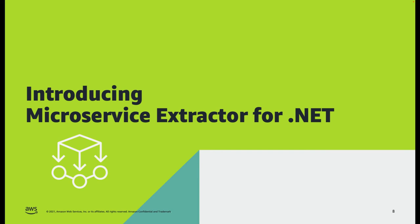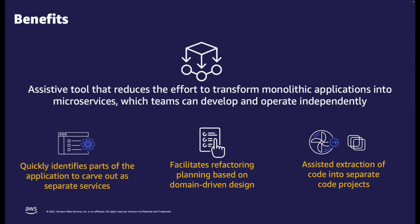This is why we've launched the AWS Microservice Extractor for .NET at re:Invent 2021. This new tool will help simplify this process and make extracting microservices easier. The Microservice Extractor helps you identify candidate code in your application through a visual representation of your classes, then helps you to actually perform the extraction of a microservice automatically.